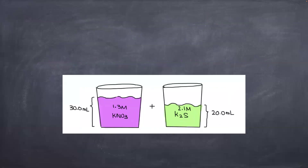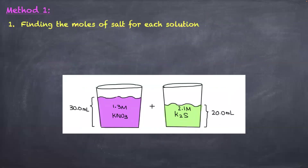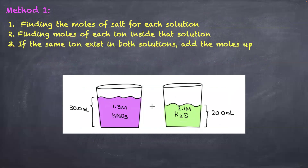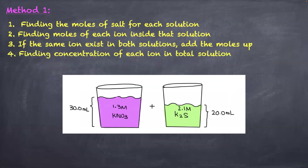There are two methods for doing this. The first method is to start by finding the moles of each salt for each solution, then finding the moles of each ion inside that solution. If the same ion exists in both, you add the moles up and then find the concentration of each ion in the total solution — when 30 plus 20 mL are combined.